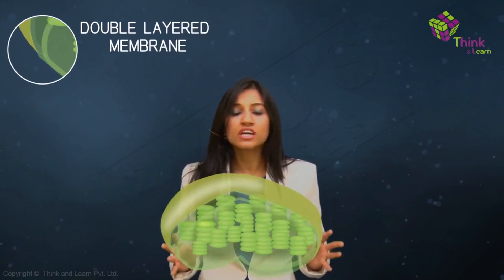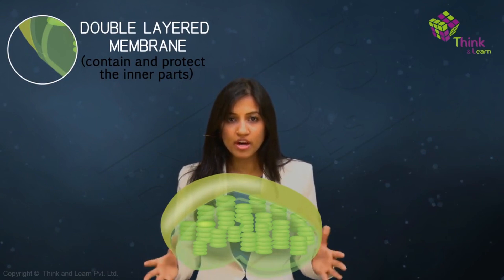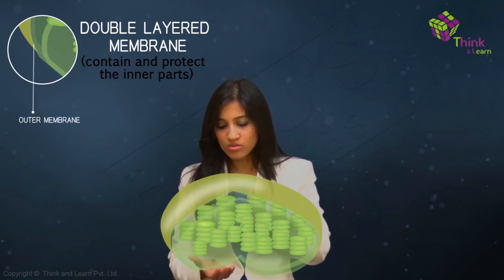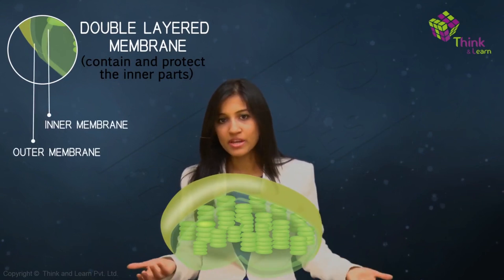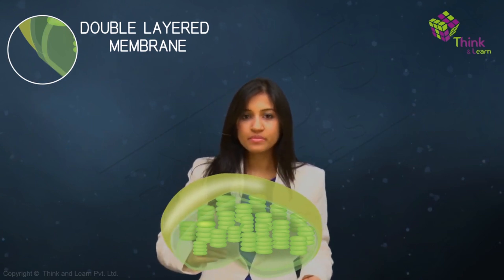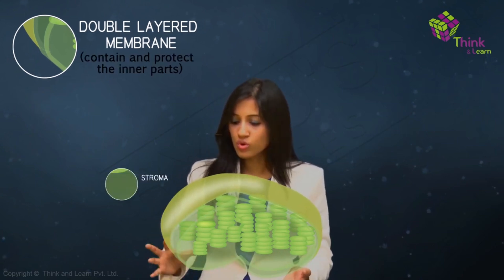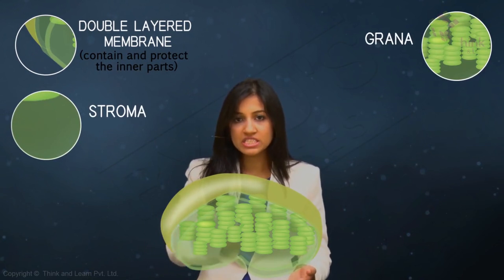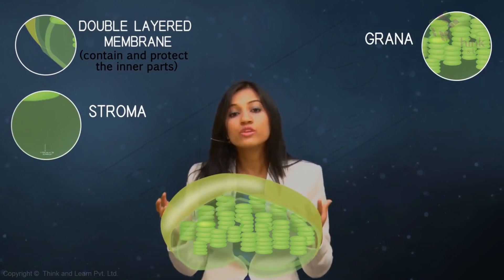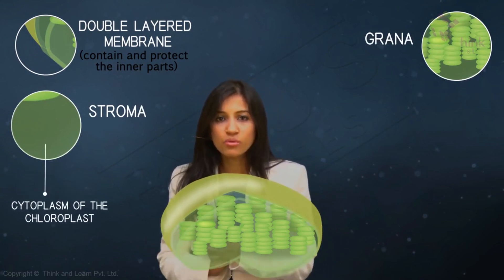Two membranes contain and protect the inner parts of the chloroplast, appropriately named the outer and the inner membranes. The inner membrane surrounds the stroma and the grana. The grana are these stacks, and the stroma is a kind of cytoplasm or matrix of the chloroplast.